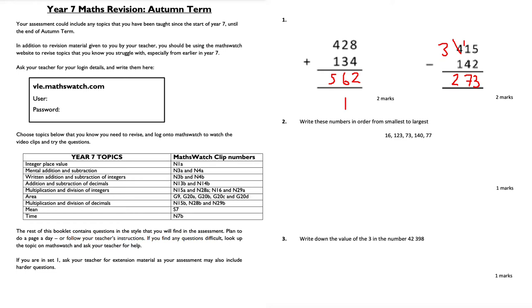Question 2: write these numbers in order from smallest to largest. The smallest number is 16, then 73, then 77, then 123, then 14 — and those are my numbers in ascending order from smallest to largest.